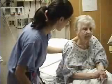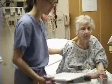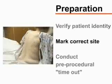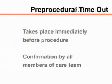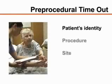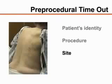Explain the procedure to the patient and obtain written informed consent. You should also verify the patient's identity, mark the correct site, and conduct a pre-procedural timeout. The timeout, which takes place immediately before the procedure is started, consists of confirmation by all members of the care team that the patient's identity, the procedure he or she is to undergo, and the site of the procedure are all correct.